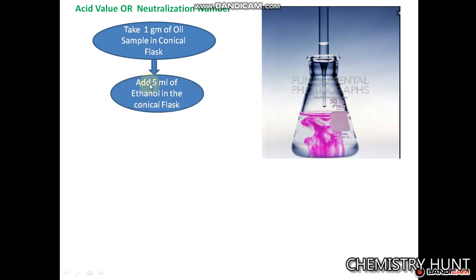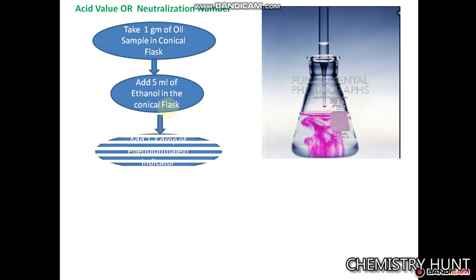Add 5 ml of ethanol in the conical flask. After that, add two to three drops of phenophthalein indicator.